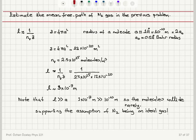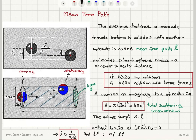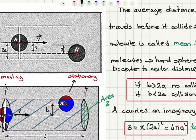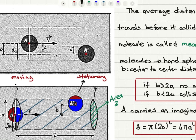The mean free path has been estimated to be 3 times 10 to the minus 7 meters, or 0.3 micrometers. To summarize: we defined the mean free path L as the average distance a molecule travels before it collides with another molecule. To calculate this, I modeled the molecules as hard spheres with radius A. Molecule A moves with velocity V toward stationary molecule A prime, and I find the center-to-center distance B and compare it to 2A.